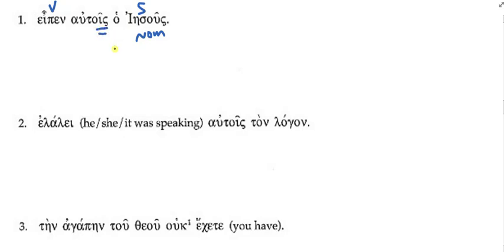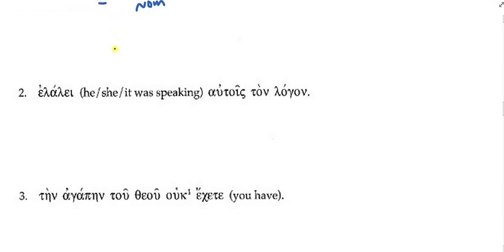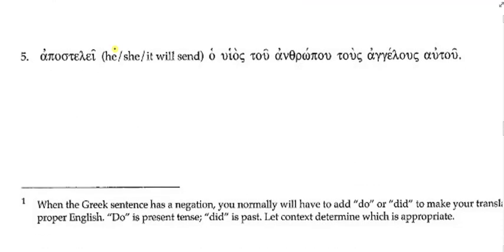Let's look at number five together. Let's read this in unison: 'apostelei ho huios tou anthropou tous angelous autou.' All right, can you find a verb anywhere? 'Apostelei' — okay. So here's what we always want to try to do: find your verb. I suggest marking these things down when you find them. So the verb will be 'he/she/it will send,' or if I can find an actual subject, what case would it be in?